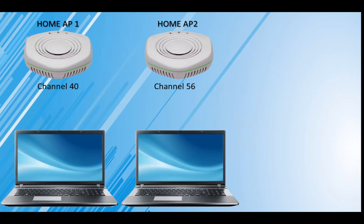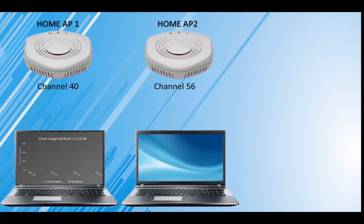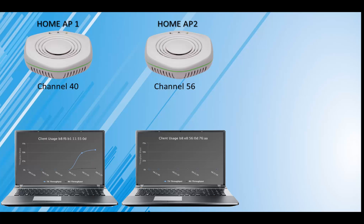One of your subscribers has two APs, each serving a different user watching a movie or downloading a large file. The performance for each client is represented by the throughput charts shown here.